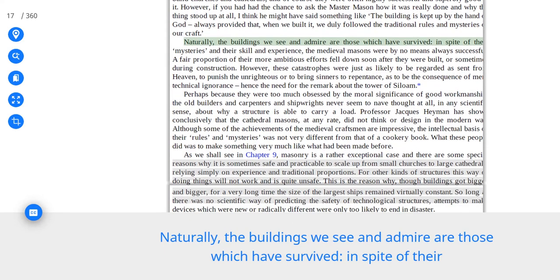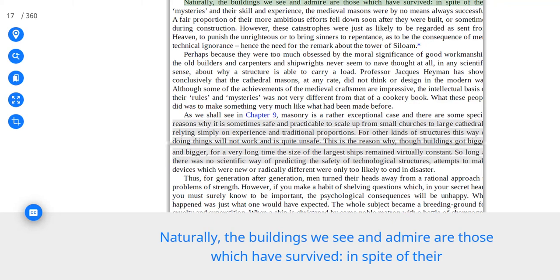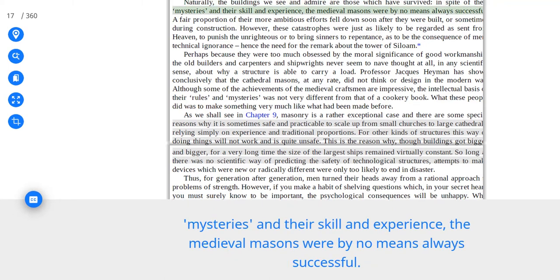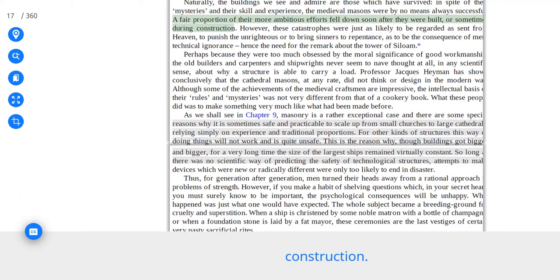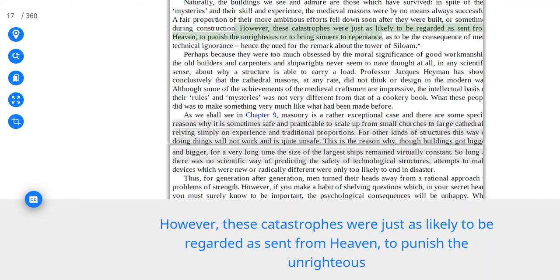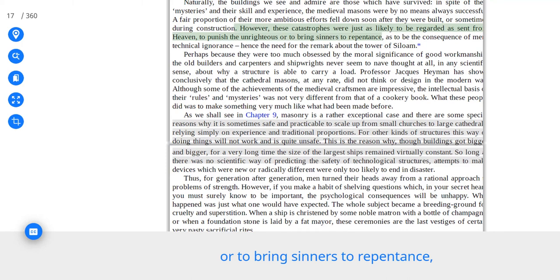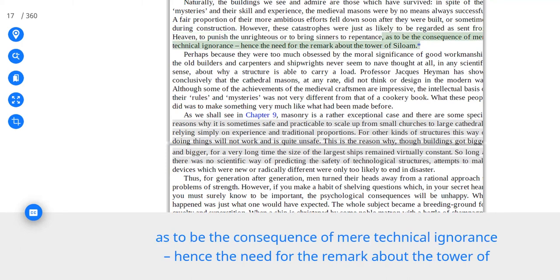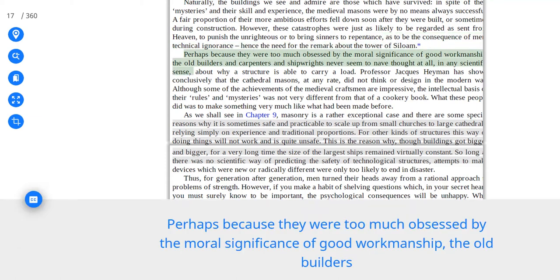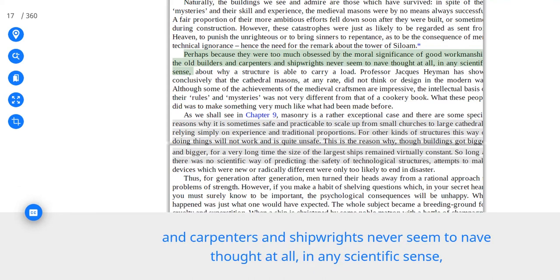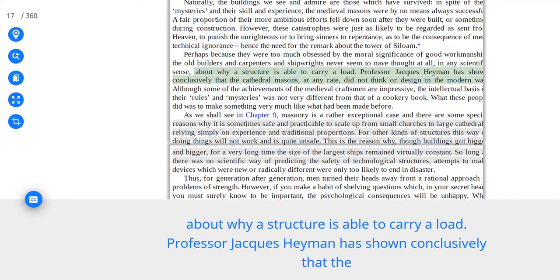Naturally, the buildings we see and admire are those which have survived. Despite their mysteries and their skill and experience, the medieval masons were by no means always successful. A fair proportion of their more ambitious efforts fell down soon after they were built, or sometimes during construction. However, these catastrophes were just as likely to be regarded as sent from heaven, to punish the unrighteous or to bring sinners to repentance, as to be the consequence of mere technical ignorance, hence the need for the remark about the Tower of Siloam.